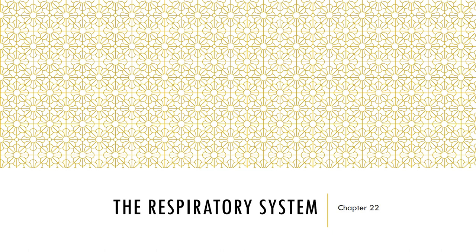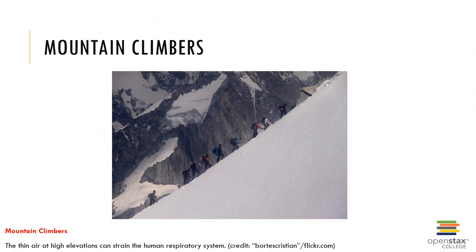In chapter 22 we will discuss the respiratory system. The respiratory system is important because during respiration we exchange gases, most notably oxygen and carbon dioxide, between the atmosphere, lungs, blood, and tissue. We have to maintain a certain amount of oxygen and carbon dioxide content within our body in order for homeostasis to be maintained.